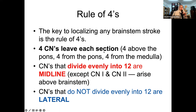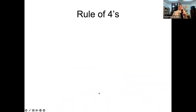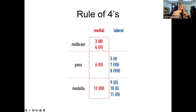There are four cranial nerves above the pons, four from the pons, and four from the medulla. Of the 12 cranial nerves, any cranial nerve that divides evenly into 12 is found in the midline. The exceptions are cranial nerves one and two, which arise above the brainstem. Cranial nerves that do not divide evenly into 12 are lateral. So you'd expect in the midline: CN III, IV, VI, and XII. Everything else — V, VII, VIII, IX, X, XI — arises laterally.